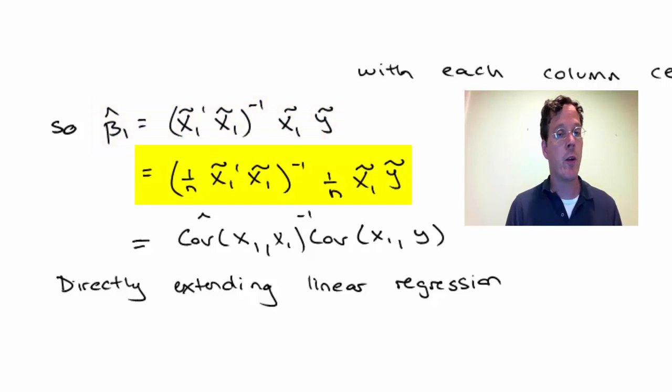We can multiply and divide by 1 over n. When you do that, x1 tilde transpose times x1 tilde times 1 over n is exactly the empirical variance-covariance matrix of x1 with itself. And x1 tilde times y tilde times 1 over n is exactly the covariance between x1 and y. So directly extending linear regression, we see that the result for multivariate regression is the variance-covariance term involving the x's inverted times the covariance term between the x and the y's. In linear regression, it just works out to be the covariance between the x and the y's divided by the variance in the x's. So it's the direct extension of linear regression.